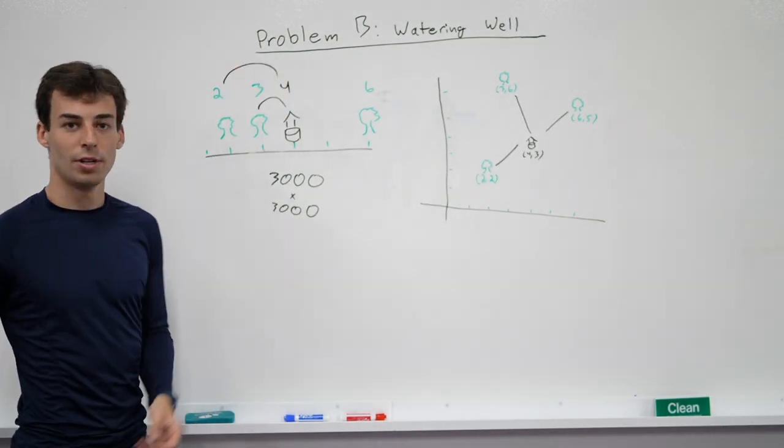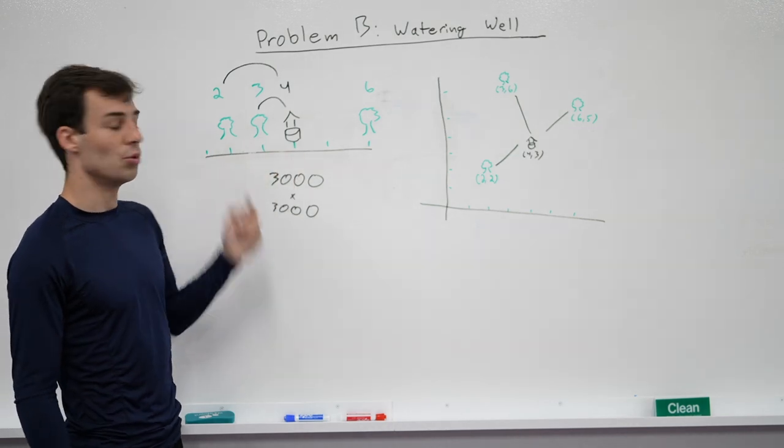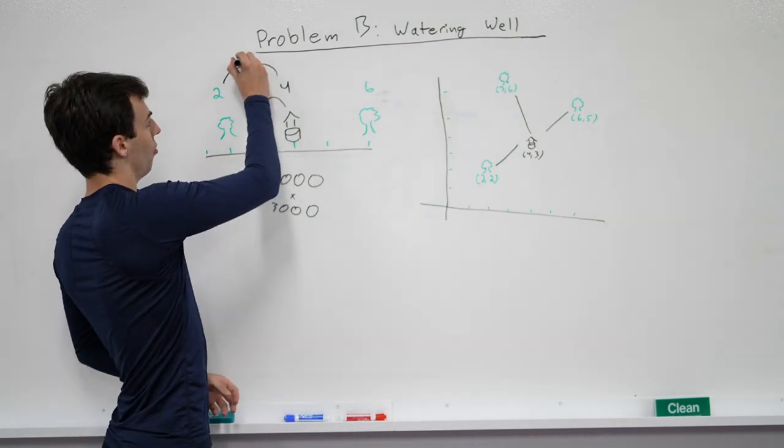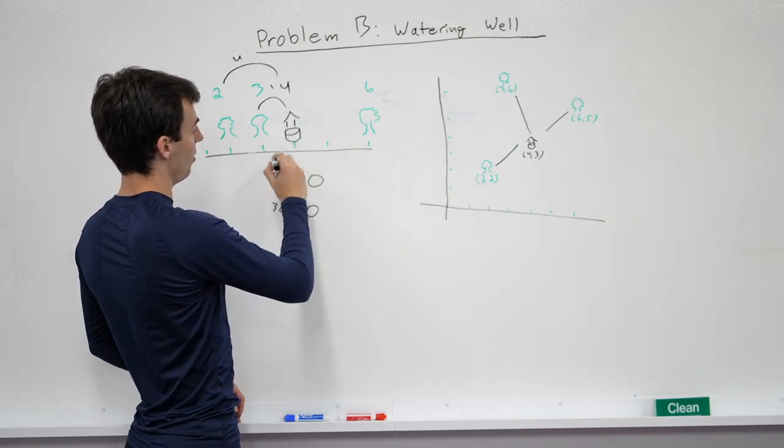We can just multiply the number of queries here by the number of trees here, and that'll give us the contribution of these two. The distance here is 2, so it's 2 squared. That would be 4 times 1 times 1. So this would contribute 4 to our answer. This contributes 1.